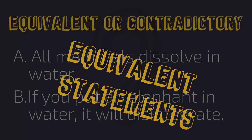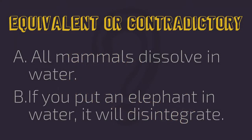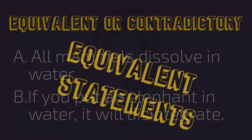Let's assume that all mammals do, in fact, disintegrate in water, turning these into true statements. If that were the case, A would be true, and since elephants are a type of mammal, B would also be true. Thus, they would still be logically equivalent.